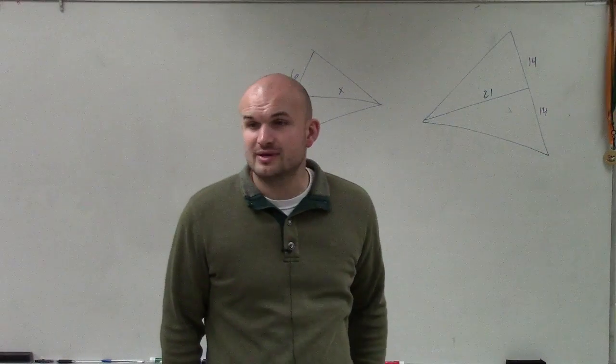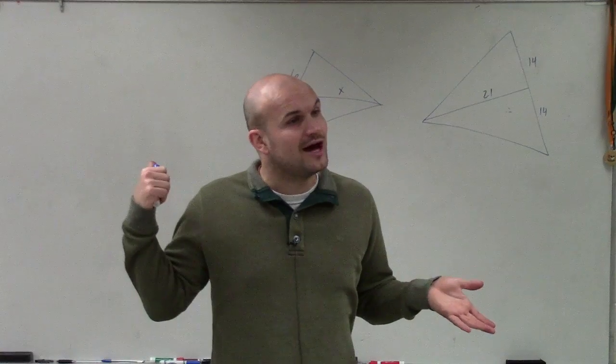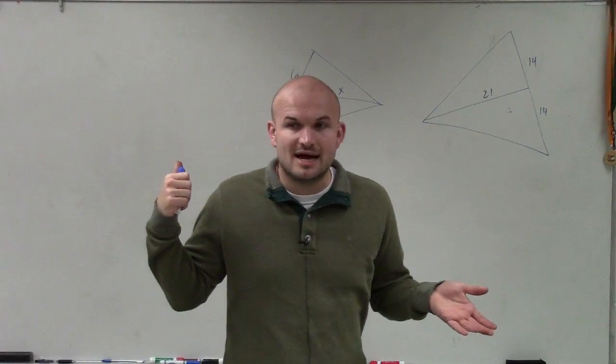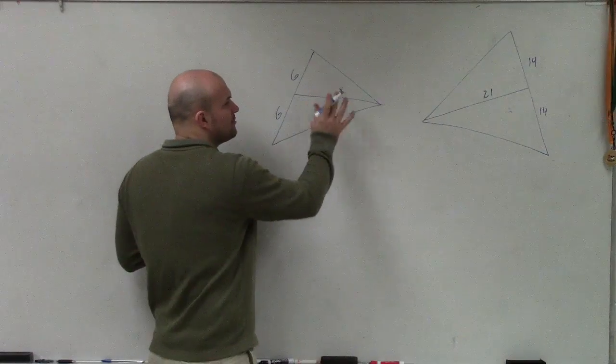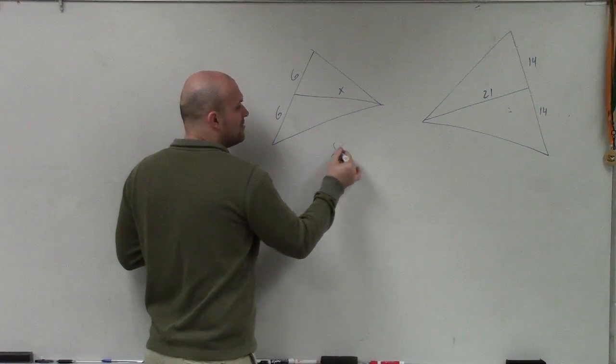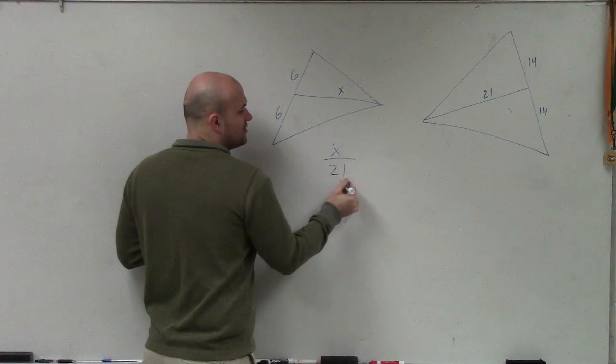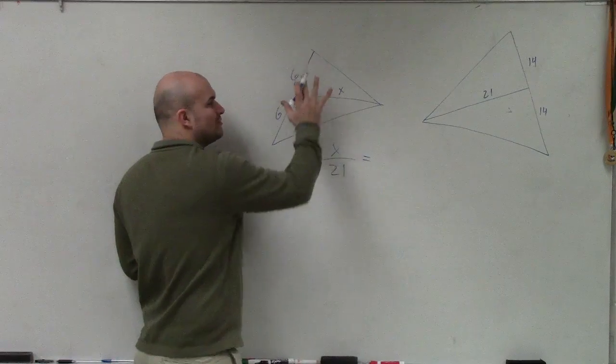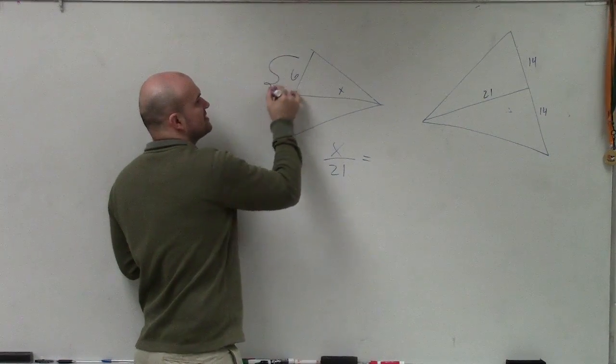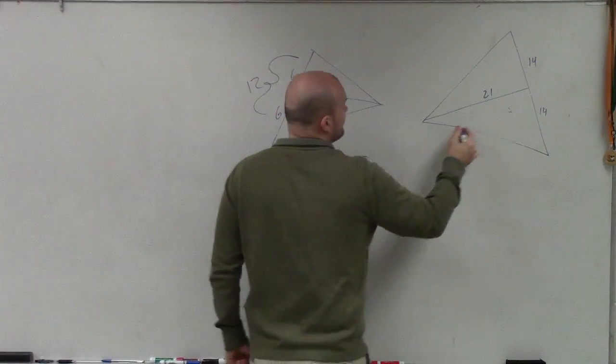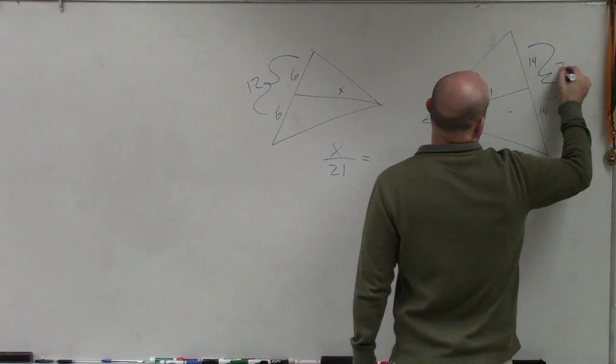So what did we talk about with the medians? Well, the medians, just like the altitude we did last problem, we can say that the ratio of my median to my other median is equivalent to the ratio of these lengths. Well, if this is 6 and that's 6, that's 12. And that's 28.